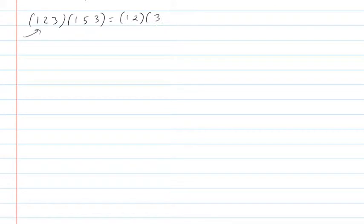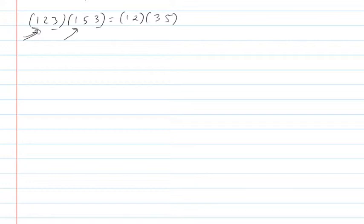Continuing: three goes in, becomes one, one becomes five, five stays a five, five becomes three. So the composition of these two three-cycles — same first and third number, different middle — turns into a composition of two two-cycles: one has the two numbers (1, 2) in it, and the other has (3, 5).